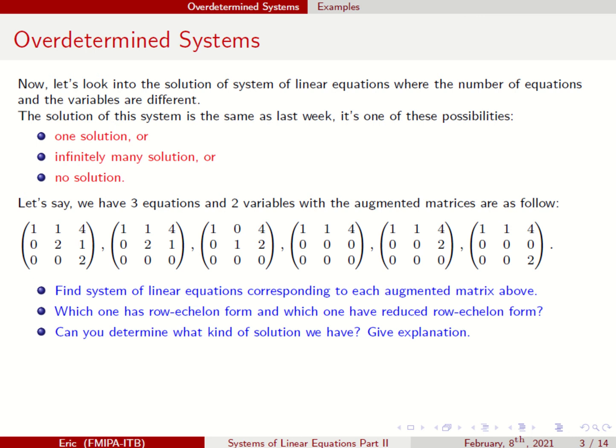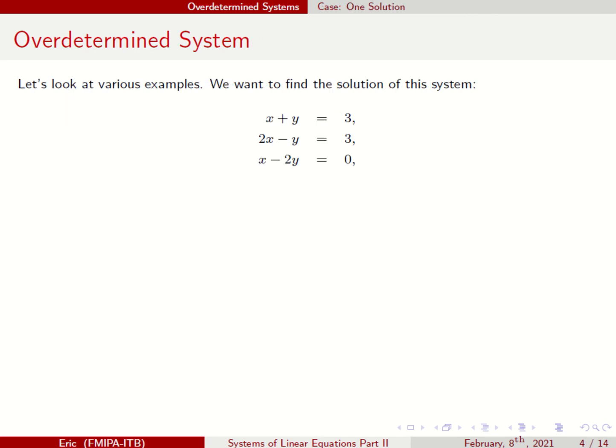You can also identify which ones have row echelon form and which ones have reduced row echelon form. Now let's look at the first example. We want to find the solution of this system: X plus Y equals 3, 2X minus Y equals 3, and X minus 2Y equals 0.